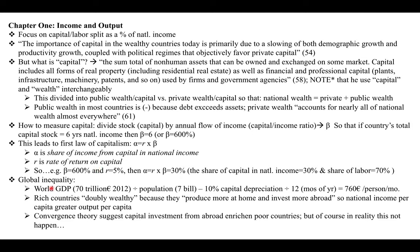He discusses global inequality using this model. World GDP in 2012 was about 70 trillion euros; divided by the population of 7 billion, minus 10 percent capital depreciation, divided by 12 months, would equal a monthly income per person of 760 euros — if world GDP were divided exactly equally per person, which of course it's not. This is just a hypothetical.